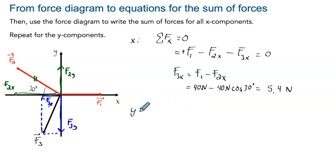And then we can repeat exactly the same thing for the y-axis. So sum of forces on the y-axis is equal to zero. Again, I focus just on the y-axis. So on the positive side, I have F2y, so plus F2y. And on the negative side, I have F3y. So this will be minus F3y.